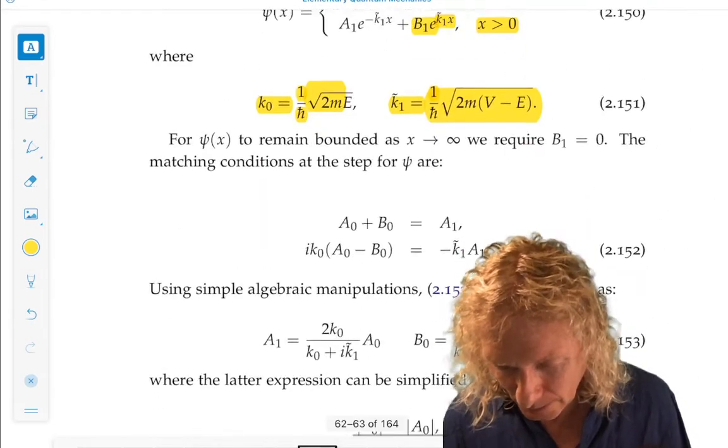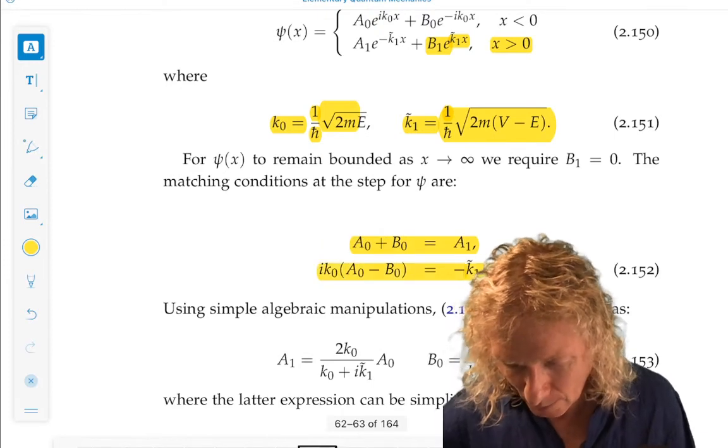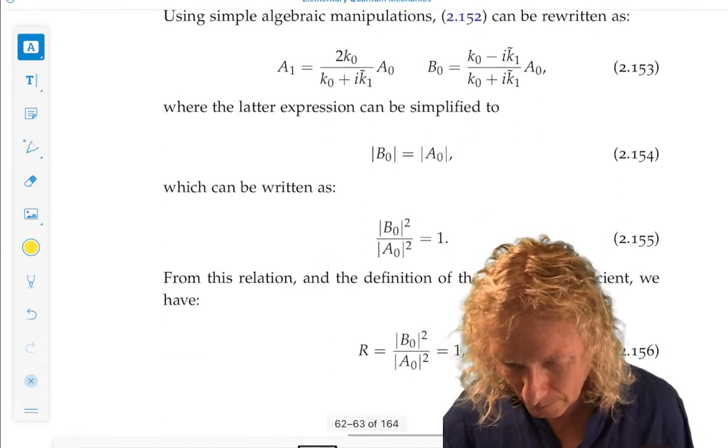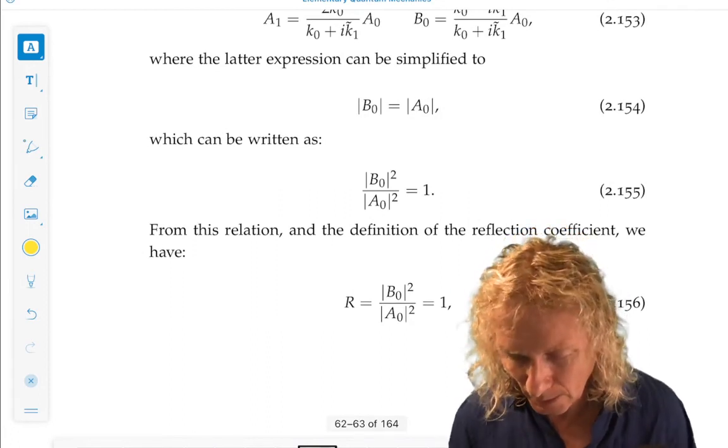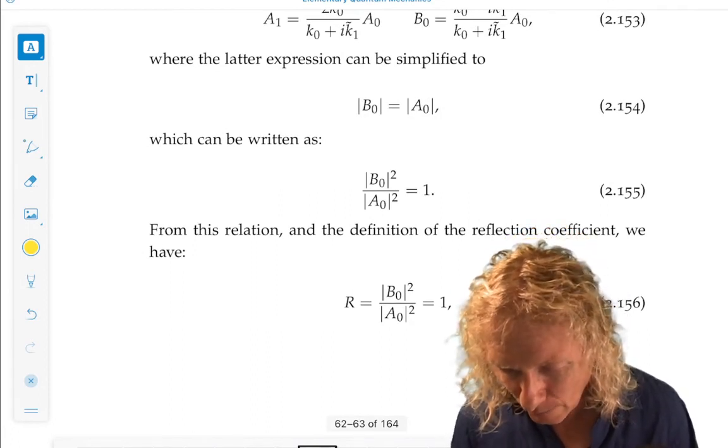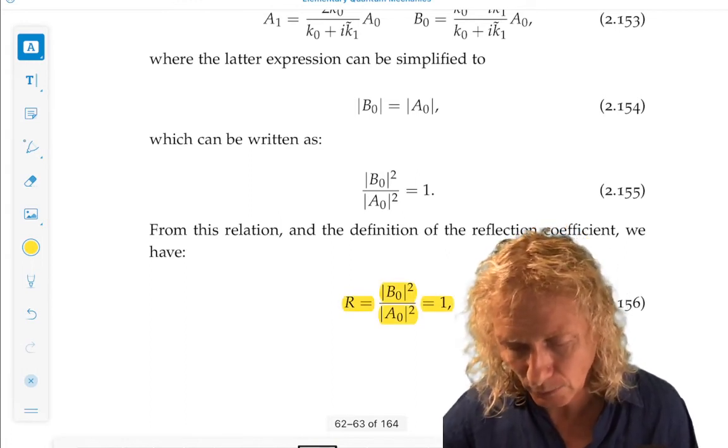Now we do exactly the same thing. Match conditions on either side. Match probability. Have the same interpretation. And what you end up getting is everything is... All the probability current is reflected.